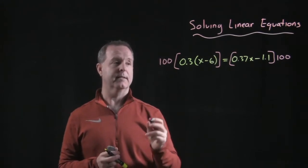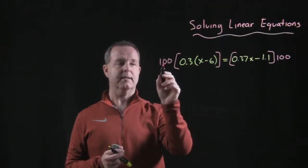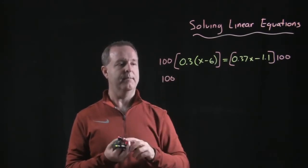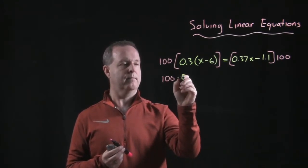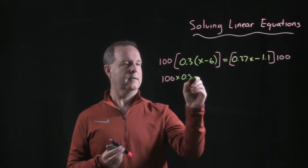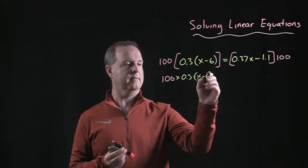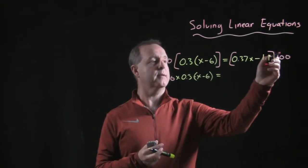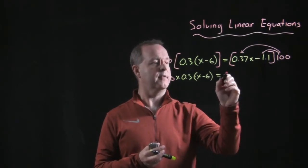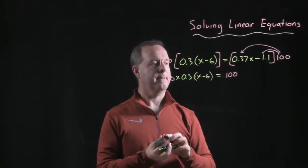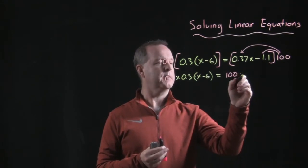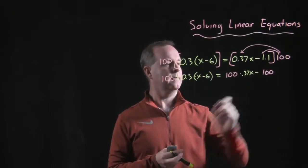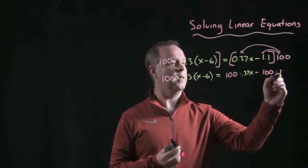And let's see what happens. Since these are all products, I can do 100 times 0.03. So this just becomes 100 times, that's 100, 0.03 times, I'll just use parentheses there, x minus 6, equals 100 times this first term because I'm going to distribute it to both terms.